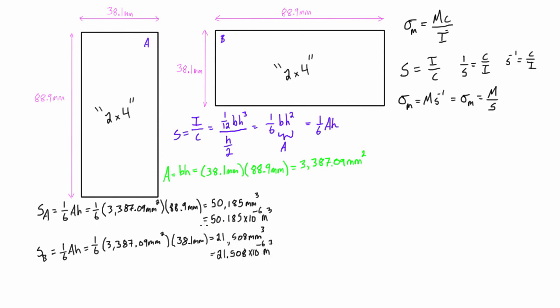So we're actually seeing that the elastic section modulus is almost twice as large of a value when we're in orientation A than when we're in orientation B.